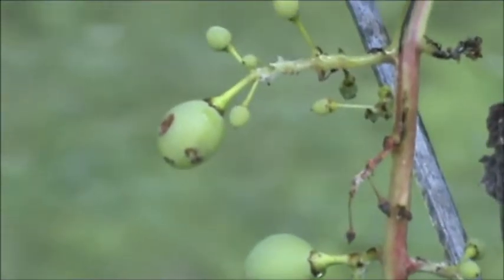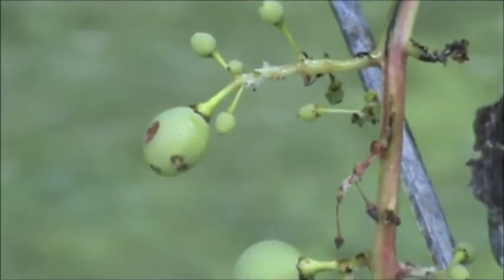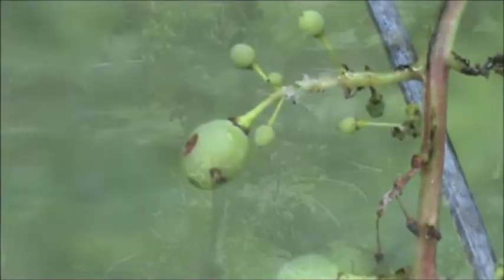Black rot initially starts as a small brown spot on leaves, stems, vines, and grapes, as shown here.